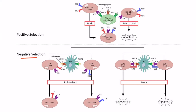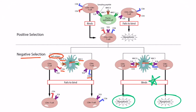In negative selection, an antigen-presenting cell (APC) presents a self-antigen to a CD4 cell using MHC2, and to a CD8-positive T-cell using MHC1. If either a CD4 or CD8-positive T-cell receptor binds to the self-antigen, it will undergo apoptosis — we can see those cells binding to the antigens and undergoing apoptosis. However, if neither the CD4 nor CD8-positive T-cell receptors bind — so it fails to bind — then the T-cell is allowed to further mature.